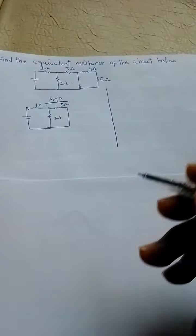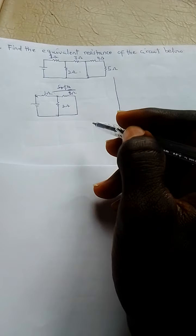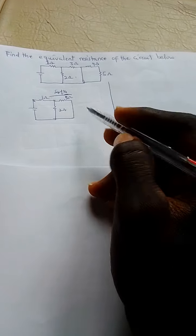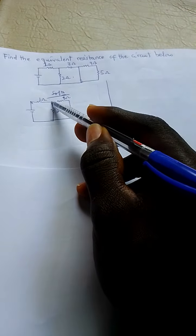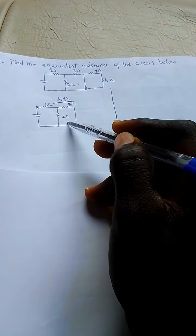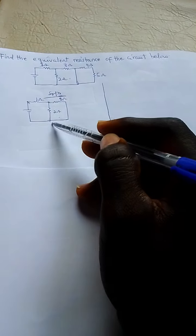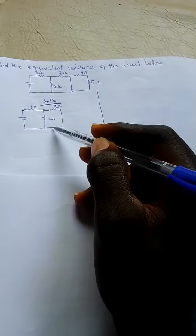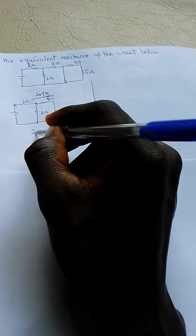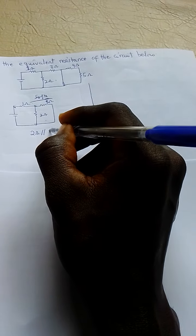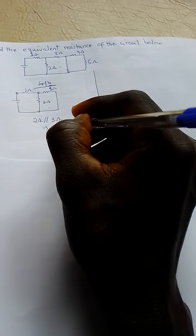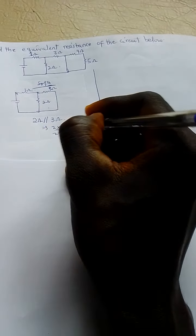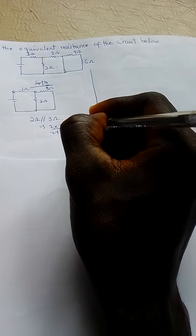From here I need equivalent resistance, that's my RT. I can see that my 3 ohm and the 2 ohm are in parallel because there is a node here. So 2 ohm is parallel to the 3 ohm, and that is giving me 2 times 3 over 2 plus 3, and that is equal to 6 over 5 ohms.